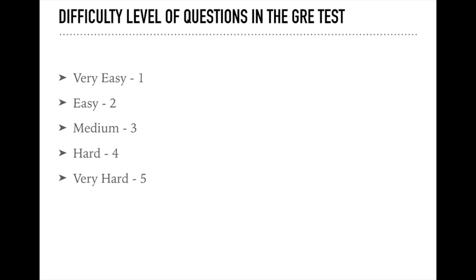In the GRE test there are questions of five different difficulty levels, starting from very easy to very hard, numbered 1 through 5. The real meaning of these difficulty levels we'll see in the original GRE reports in the next slides.